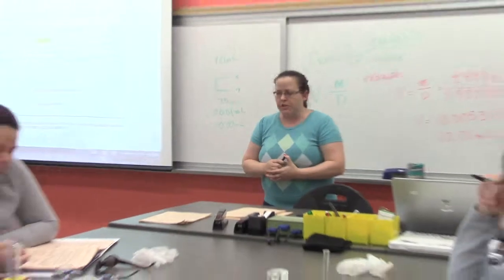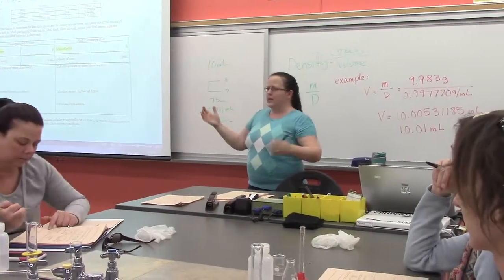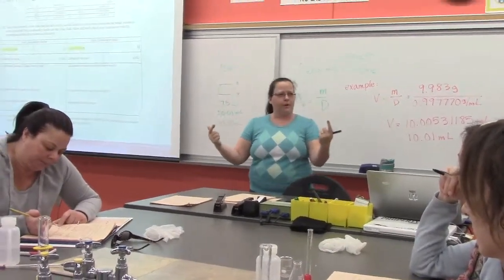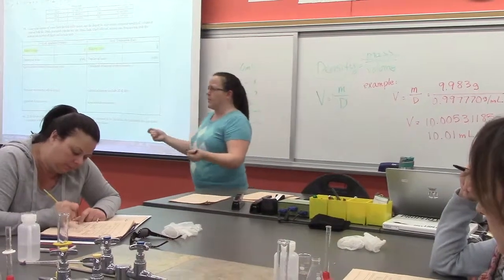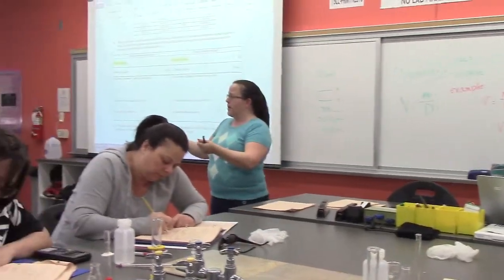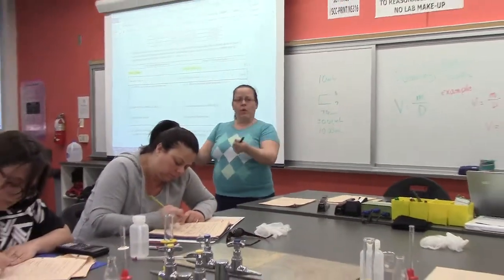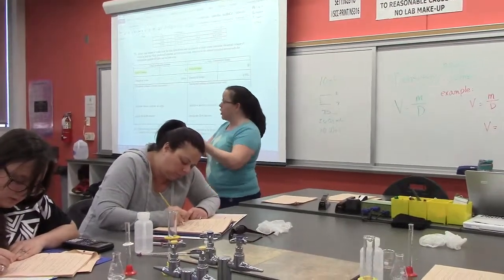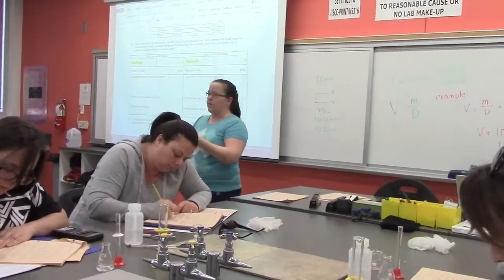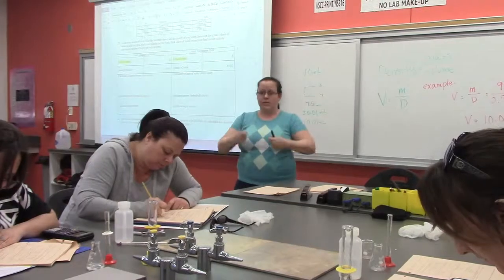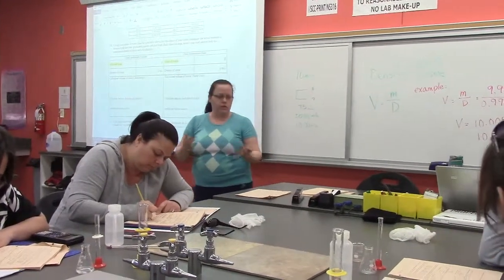When it says use your data to explain your choice, it's the thought process we just went through. This graduated cylinder is a to contain because the volume of water that was in the graduated cylinder was closer to 10. The volume of water in the flask was farther away from 10. That's our explanation.